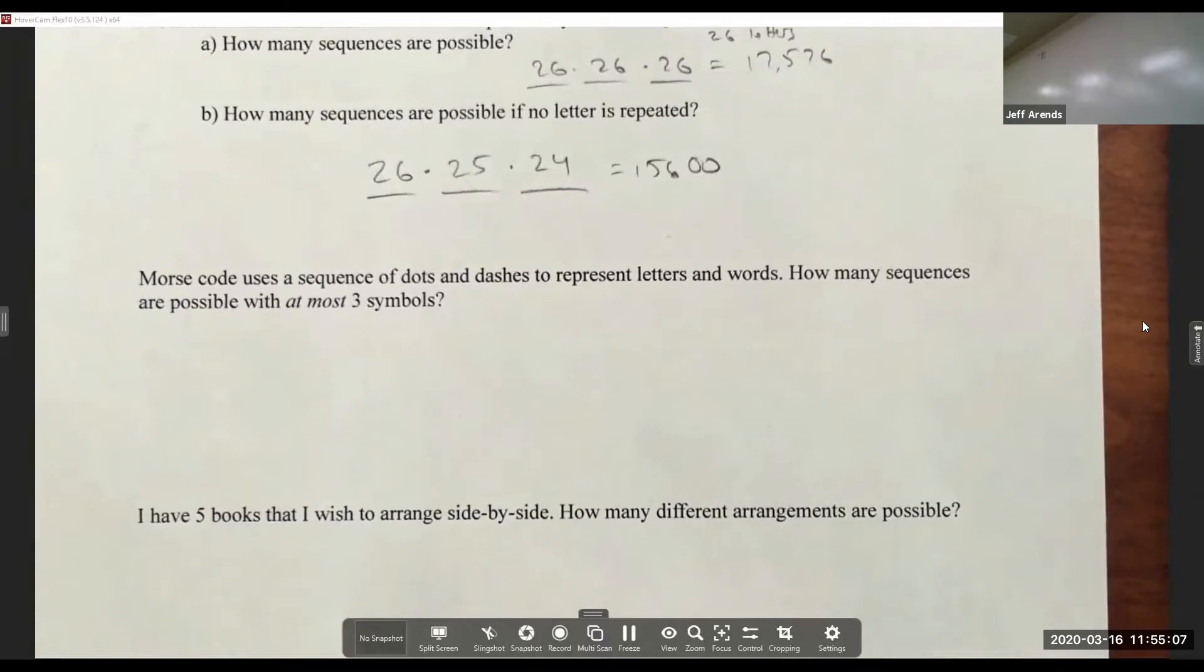All right, let's look at this example where we have Morse code. Morse code uses a sequence of dots and dashes to represent letters and words. How many sequences are possible with at most three symbols?